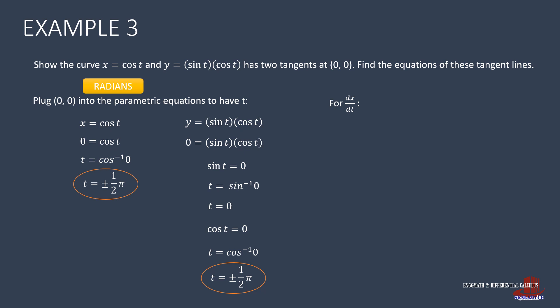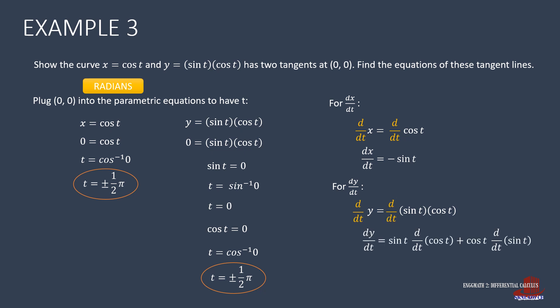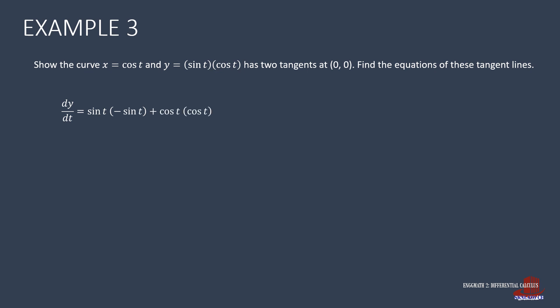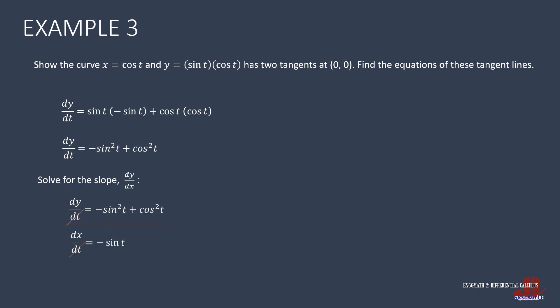We take derivatives of x and y with respect to t. For x = cos(t), dx/dt = −sin(t). For dy/dt, we differentiate sin(t)·cos(t) using the product rule: sin(t)·(−sin(t)) + cos(t)·cos(t) = −sin²(t) + cos²(t). Dividing to get dy/dx, we have dy/dx = (−sin²(t) + cos²(t)) / (−sin(t)), which simplifies to (sin²(t) − cos²(t)) / sin(t).